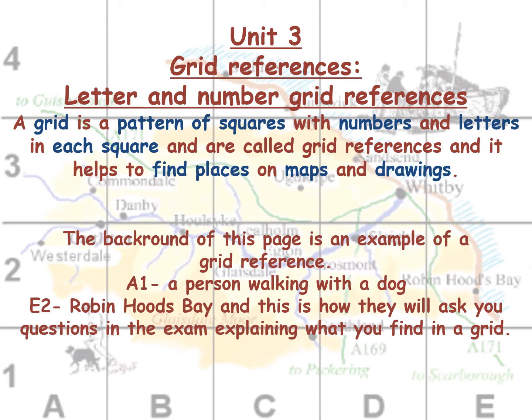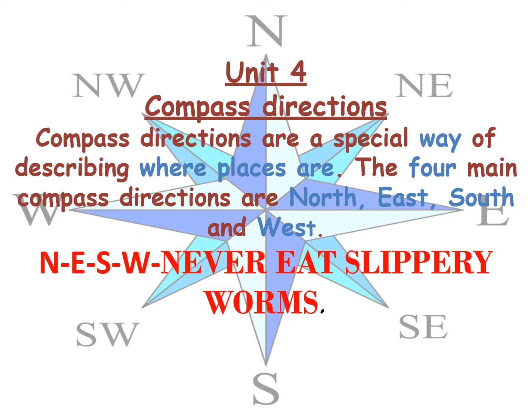E2 is Robin Hood's Bay. This is how they will ask you questions in the exam, explaining what you must find in a grid. This concerns grid references and this is how it will look — it's blocks with numbers and letters, and you must identify what is hidden in those blocks.